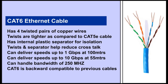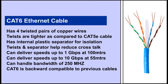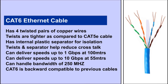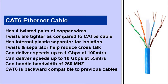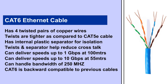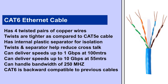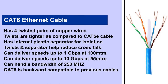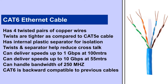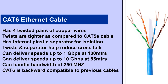Cat6 ethernet cable is designed to meet more stringent specifications. Like Cat5e, it also has four twisted pairs of wires, but these twists are tighter compared to Cat5e cables. It also has an internal plastic separator to isolate the pairs of cables, which helps reduce crosstalk and system noise that disrupt communication channels. It is designed to handle one gigabit speed at 100 meters, and it can handle 10 gigabit speed at 55 meters.